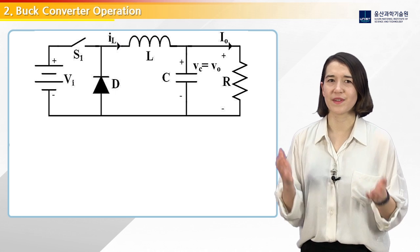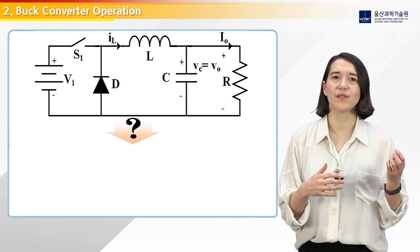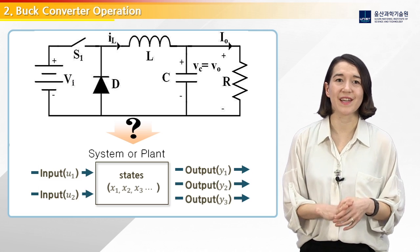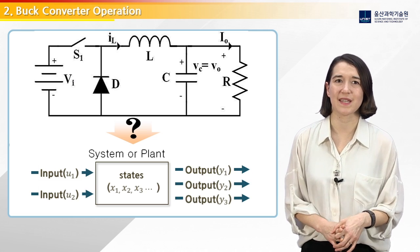But how do we go from this switching circuit to this plant system? When in modeling doubt, we always start with the dynamic states.